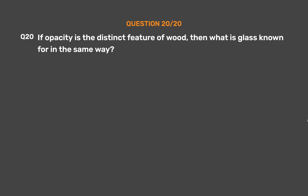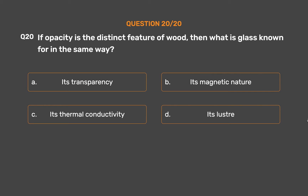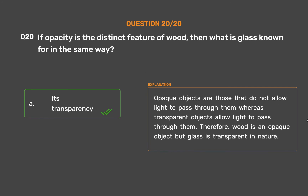Question number 20. If opacity is the distinct feature of wood, then what is glass known for in the same way? Option A: Its transparency. Option B: Its magnetic nature. Option C: Its thermal conductivity. Option D: Its lustre. The correct answer is Option A, its transparency. Opaque objects do not allow light to pass through them, whereas transparent objects allow light to pass through them. Therefore, wood is an opaque object but glass is transparent in nature.